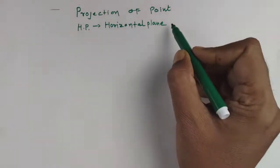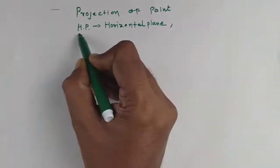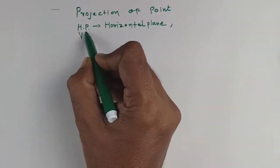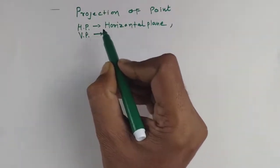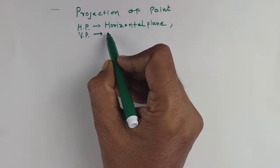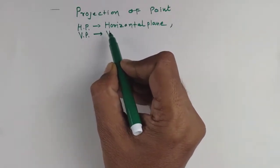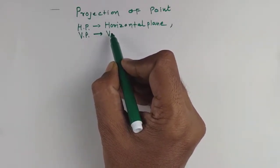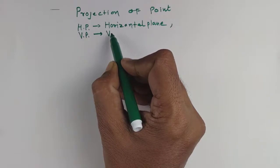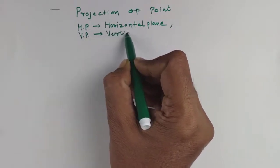Second, we have the VP plane. The surface of the plane which is perpendicular to the ground is called as a vertical plane.